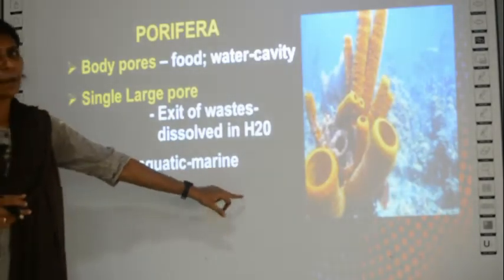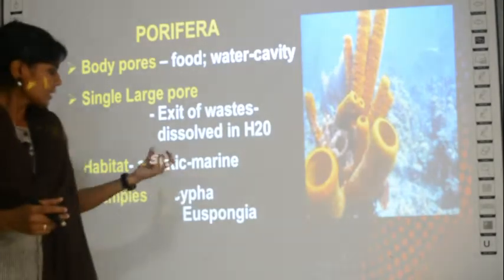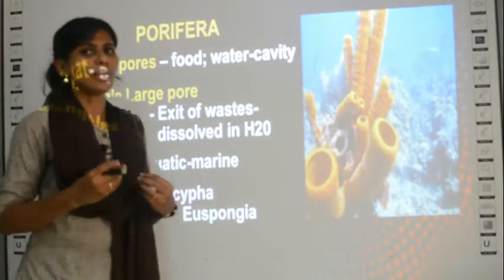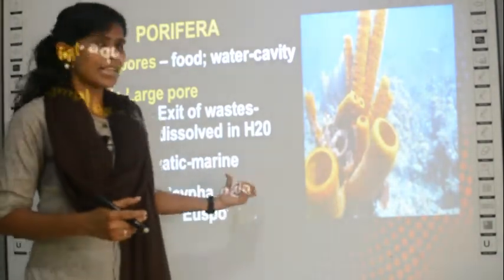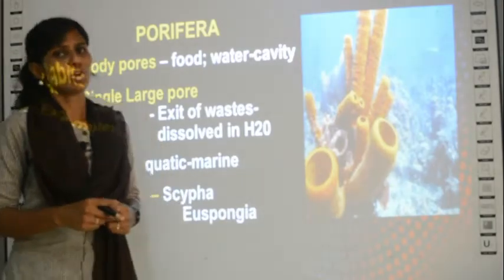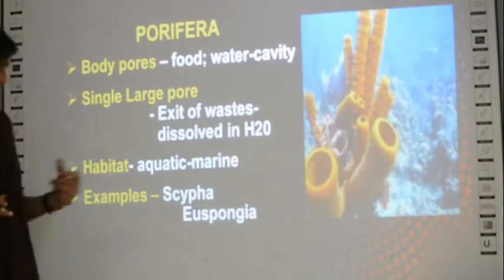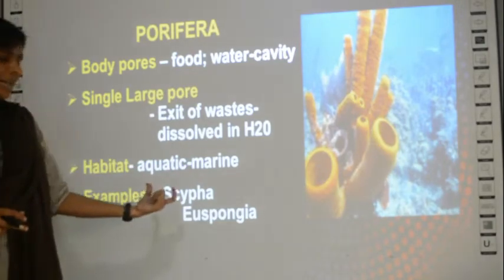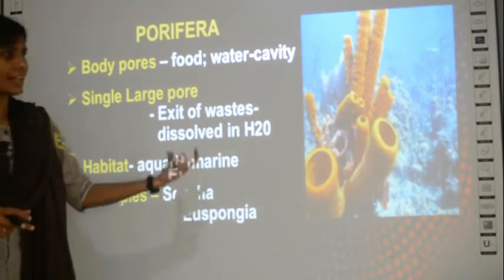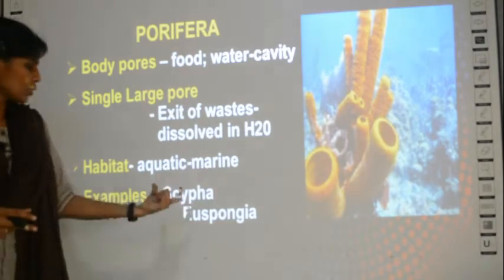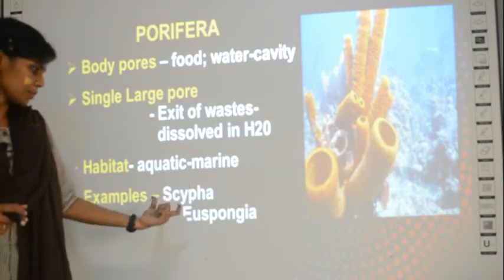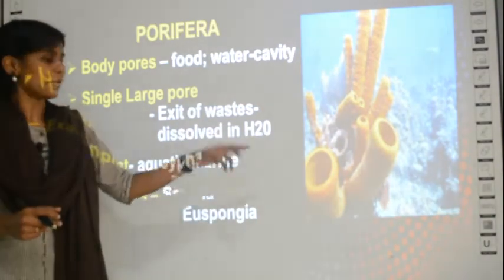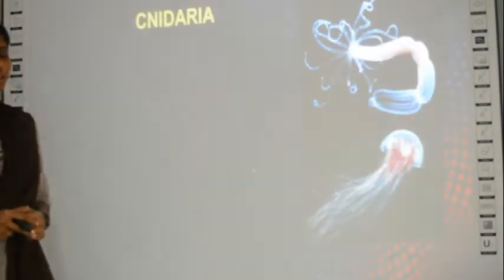The habitat of Porifera is aquatic, meaning they live in water, especially in the marine environment and not in fresh water. For every group you should memorize the examples. In this case, Porifera has two examples given in your textbook: Sypha and Euspongia, both belonging under the group Porifera.